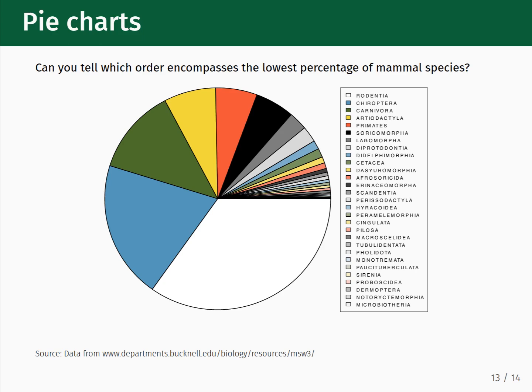Another way to show relative fractions is the pie chart, which is used a lot in popular media. However, there are reasons that the pie chart should be avoided. Pie charts can only display a small number of categories before it becomes difficult to read, which is what this example illustrates. This pie chart shows the relative fractions of different orders of mammal species. Can you tell which order encompasses the lowest percentage? The issue is that the smallest fractions are obscured by the dark black lines. This same data could have been shown using a bar chart and be easier to read.